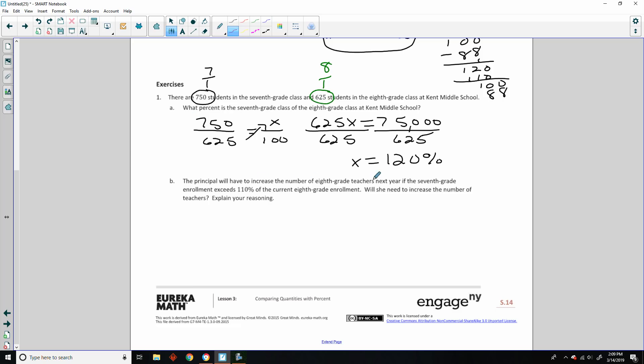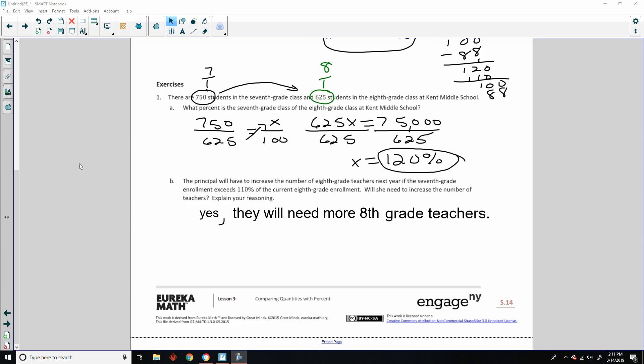B, the principal will have to increase the number of 8th grade teachers next year if the 7th grade enrollment exceeds 110% of the current 8th grade enrollment. Will she need to increase the number of teachers? Explain your reasoning. And the answer is yes, 120%. So these 7th graders are going to become 8th graders next year. We're going to assume everybody passed and did all their homework and watched my videos and understood the concepts and passed, and now we're going to become 8th graders. So yes, they're going to need more teachers. So because 750 is a 120% increase from 625, it's a 20% increase. It exceeded the 110%, so yes, they will need to hire a teacher. They will need more 8th grade teachers.